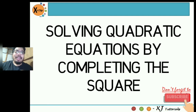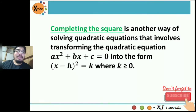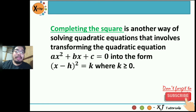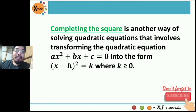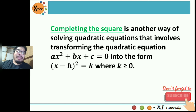First we need to define what is completing the square. When we say completing the square, it is another way of solving quadratic equations that involves transforming the quadratic equation ax squared plus bx plus c equals zero into the form quantity x minus h squared equals k, where k is greater than or equal to zero. This is the standard form for a quadratic equation: ax squared plus bx plus c equals zero.